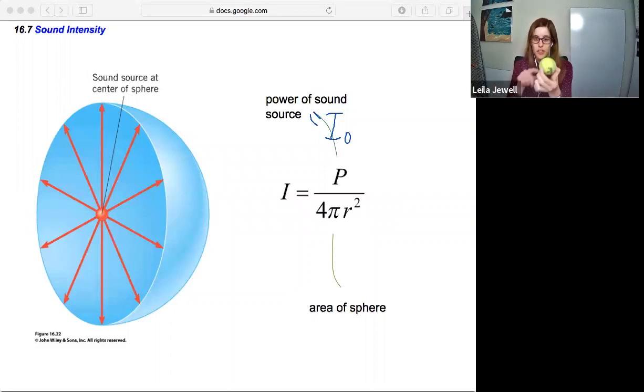If you imagine the source is right at the middle, then if it's going out uniformly in all directions, you'd care about the surface of the sphere. We have this sound source at the center emitting sound uniformly in all directions going outward. We can take I equals P over area, but now we plug in specifically the area of the sphere. If it's uniform in all directions, the area equals 4πr² because that is the surface area of the sphere.